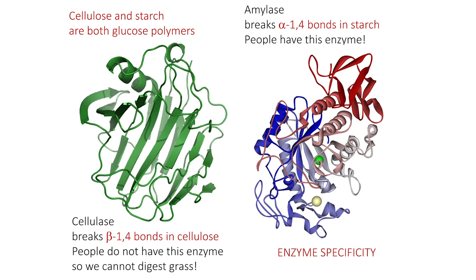On the right-hand side is an enzyme called amylase. Amylase breaks down bonds in polymers of glucose that are found in starch. You and I have this enzyme, and so we can break down starch and use this as a source of energy.